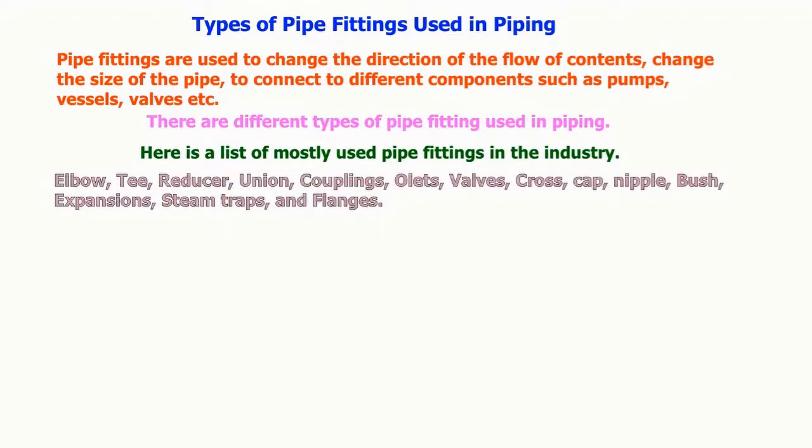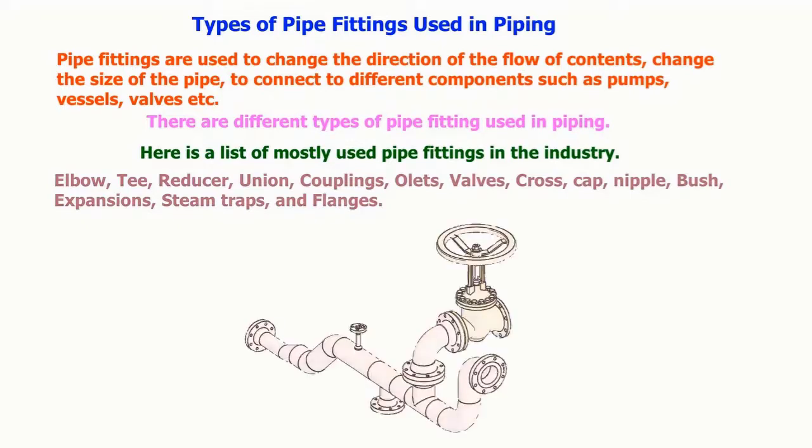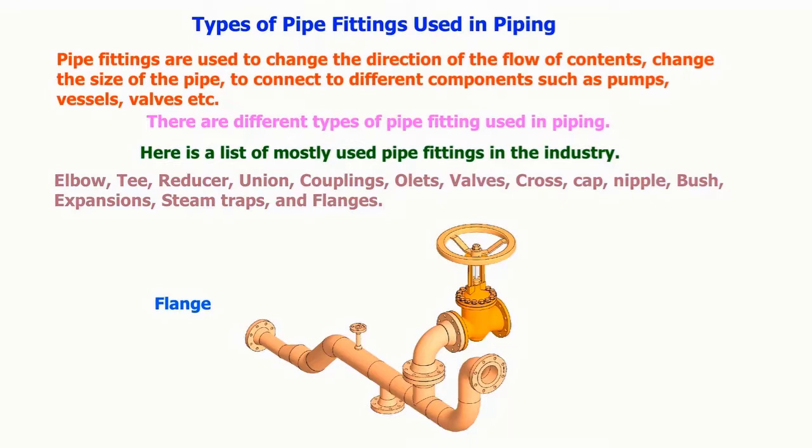Here is a list of mostly used pipe fittings in the industry: elbow, tee, reducer, union, couplings, olets, valves, cross, cap, nipple, bush, expansions, steam traps, and flanges. The elbow is used more than any other pipe fitting.